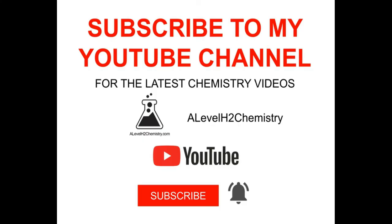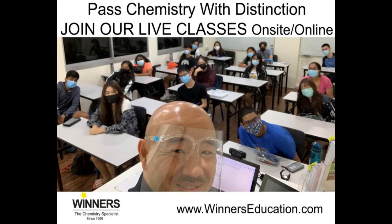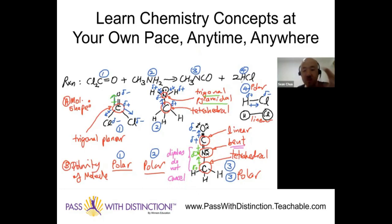If you'd like to catch my latest videos, click the subscribe button and bell for notifications. If you'd like to join my live chemistry classes and revision workshops, go to winnerseducation.com to find out how you can score distinction for chemistry on a consistent basis, either in our center or online via Zoom. You can also check out my online school at passwithdistinction.teachable.com to learn chemistry concepts at your own pace, anywhere in the world, topic by topic. This is Sean Chua from Winners Education to your distinction in chemistry.